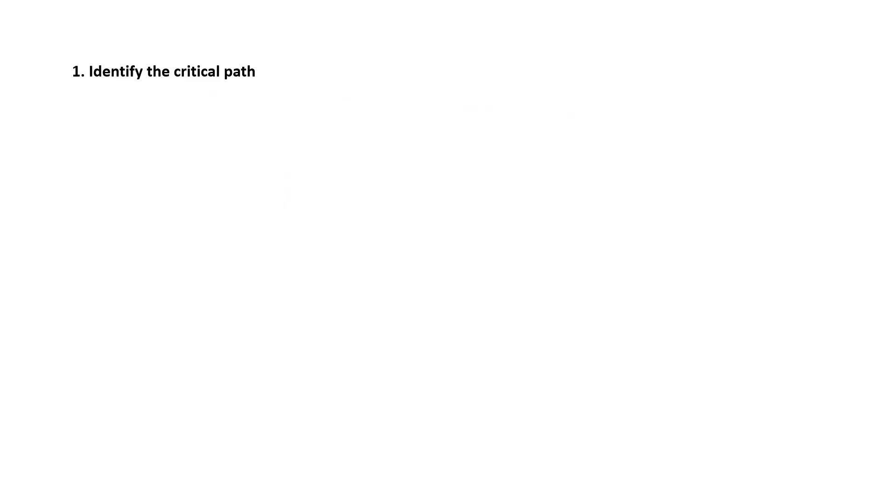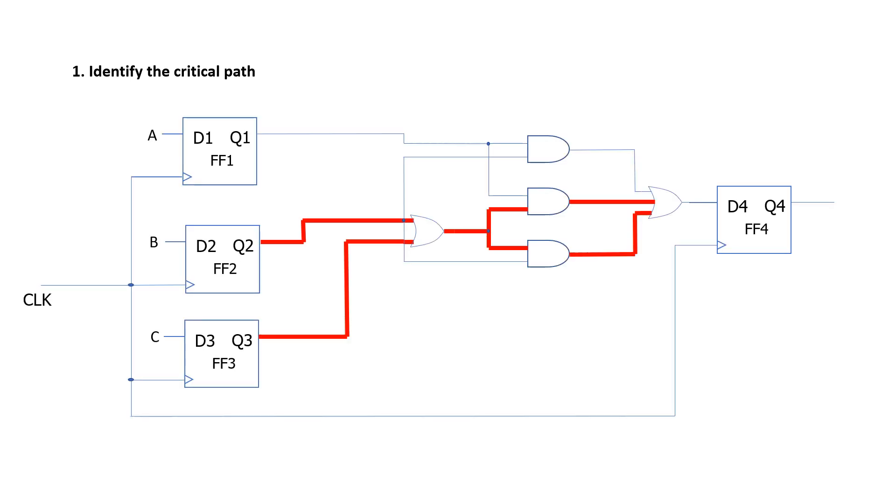First question is to identify the critical path. It can be seen that there are four contenders for the critical path as all of them traverse through three logic gates. But if we look closely, the highlighted path goes through the input of the first OR gate that has a fan out of three. High fan out means large output capacitance and large output capacitance will slow the output transition of the previous gate, thereby increasing its propagation delay. So any of these two paths can be pointed out as a critical path.